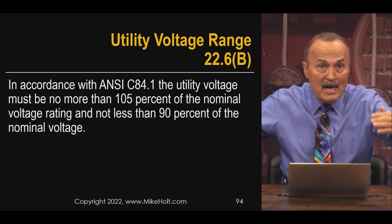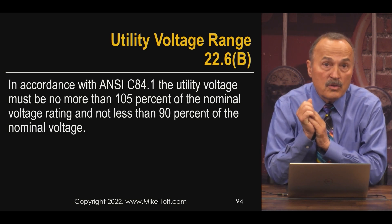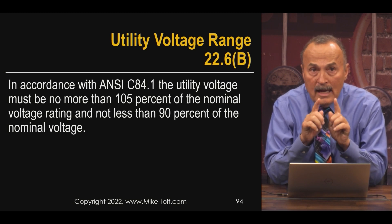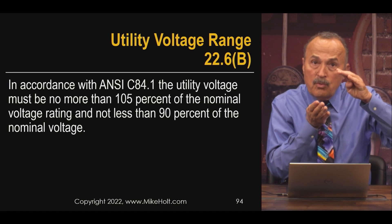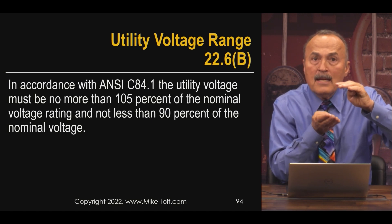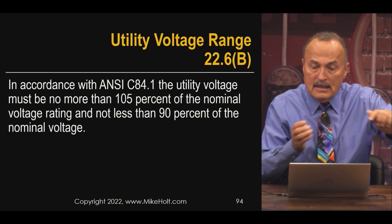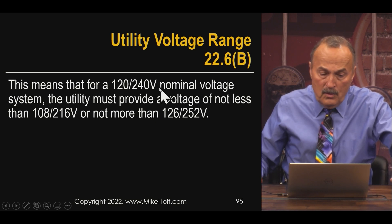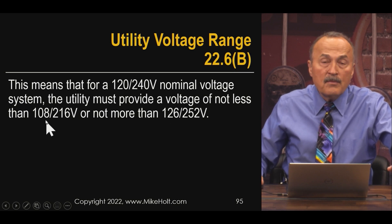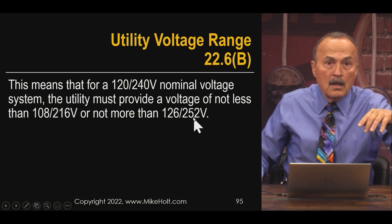No more than 5% above the nominal system voltage. In other words, they have to give you no more than 5% more than 120 volts. And also, they have to give the customer no less than 90% of the nominal system voltage. The utility is required to deliver something the customer can depend on — not more than 105% and not less than 90% of nominal. So on a 120/240 volt system, that's not less than 108/216 volts, and not more than 126/252 volts.